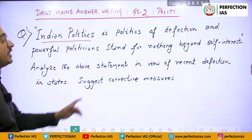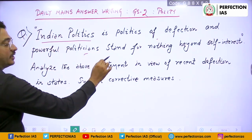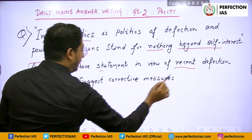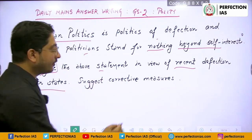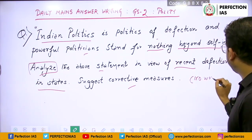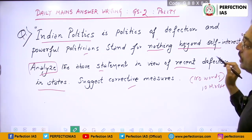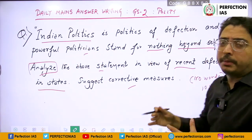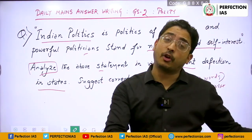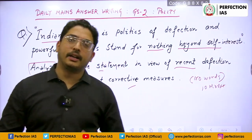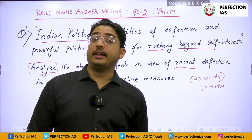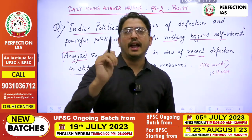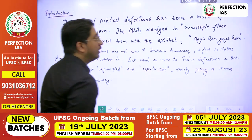The question is: 'Indian politics is politics of defection and powerful politicians stand for nothing beyond self-interest.' We have to analyze this statement in view of recent defections in states, suggest corrective measures, and write 150 words — a ten-marker. We need to cover challenges in our anti-defection law and suggest how reforms can be made.